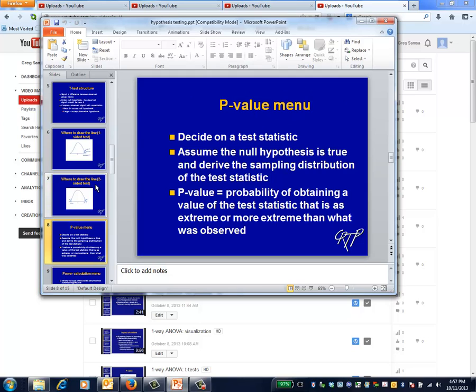More formally, the menu for calculating the p-value is: a) decide on a test statistic, such as the difference between the group means; b) derive the sampling distribution under the counterfactual assumption that the null hypothesis is true.